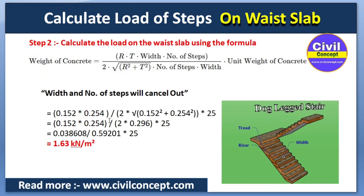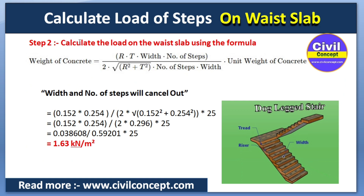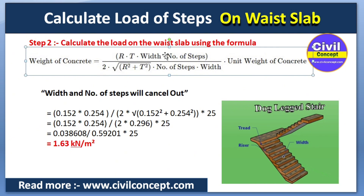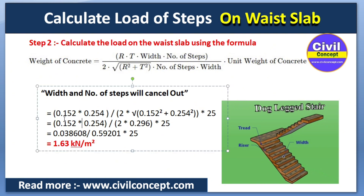The hypotenuse formula is: √(riser² + tread²), multiplied by the number of steps. Now applying the direct load formula: load on waist slab = (½ × riser × tread × width × density) divided by (width of stair × hypotenuse length × number of steps). You can see that width and number of steps appear in both numerator and denominator, so they cancel out, simplifying the calculation significantly.